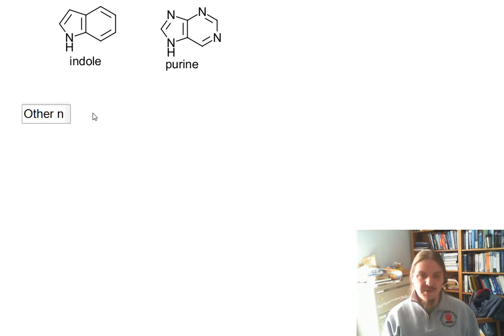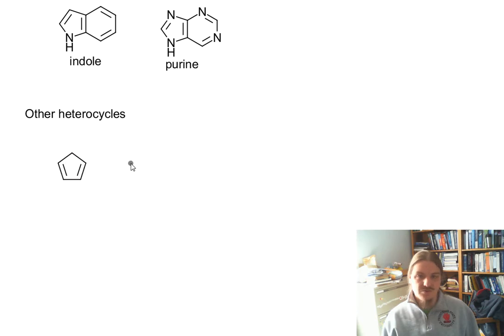Nitrogen heterocycles tend to be the most common out there in the world. But I do want to show you two other heterocycles, one with oxygen and one with sulfur, both based on this five-membered ring motif.